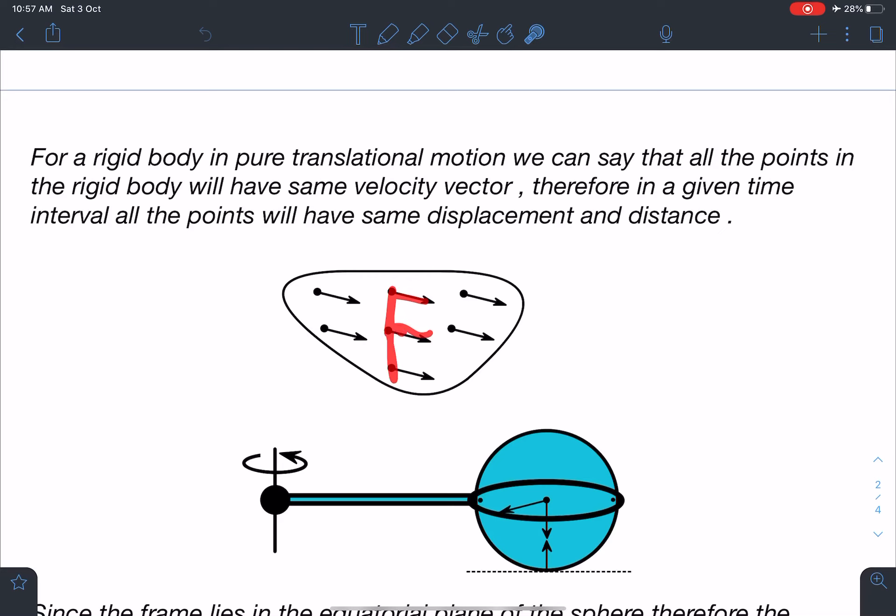That means definitely all these points, these two points will have same velocity. We can apply the same logic here. Distance between them is not going to change.